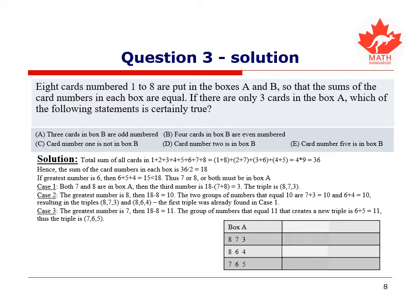To sum up, there are three groups of cards that can be in box A. 8, 7, 3, 8, 6, 4, and 7, 6, 5. Finding the corresponding card numbers in box B and summarizing them on the right side of this table gives us these values.